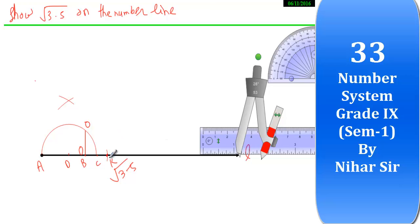So this is the perfect point for root 3.5 and this OB line is also equals to under root 3.5. So I hope you understood how to draw this number line and represent this square root of the numbers. Thank you so much for watching my video. See you in the next video.